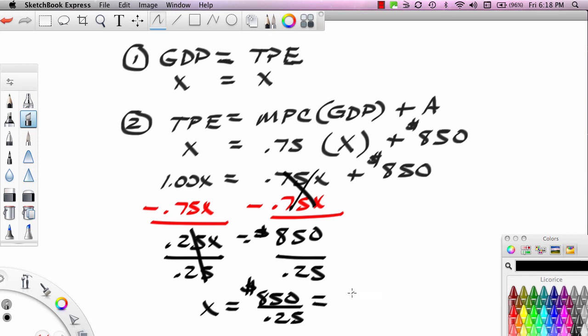X equals 850 divided by 0.25. And guess what? That equals 3,400. So 3,400 is what? Equilibrium GDP, equilibrium TPE.